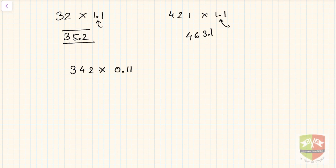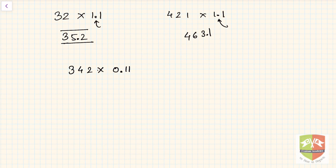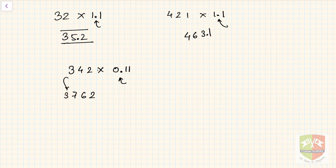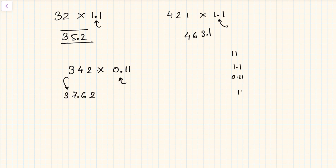For 342 into 0.11, ignore the decimal and multiply by 11: write 2, then 2 plus 4 is 6, then 4 plus 3 is 7, then bring down 3 — giving 3762. Since 0.11 has two decimal digits, the answer is 37.62. This technique works for multiplying by 11, 1.1, 0.11, or 11 times any power of 10.